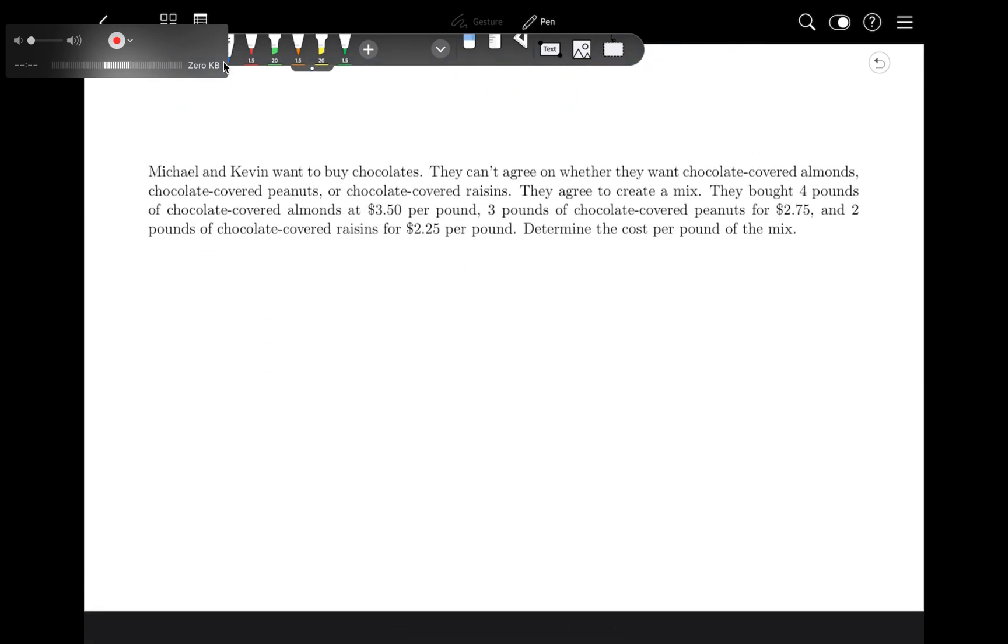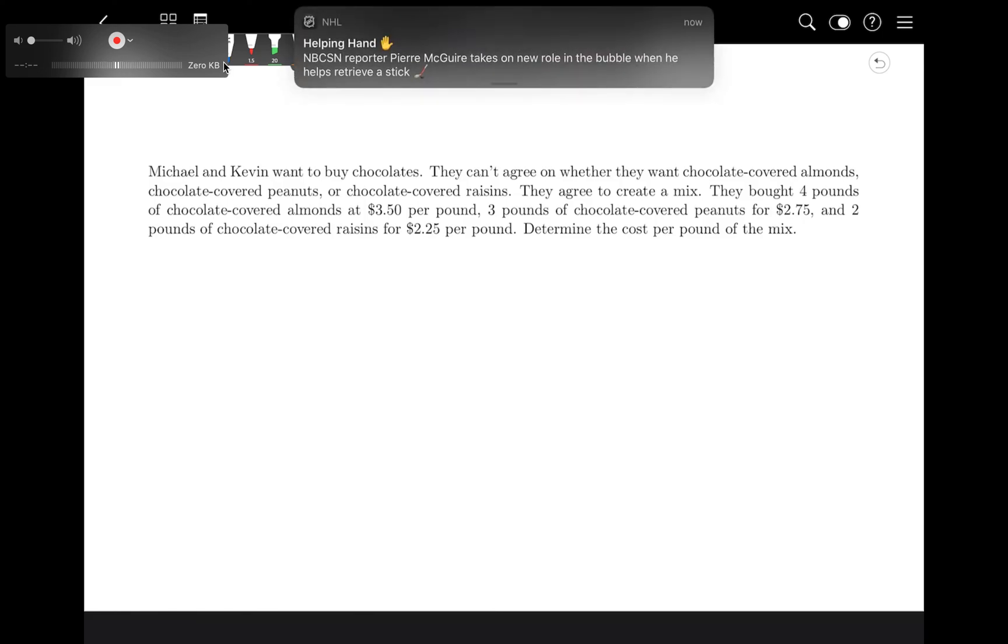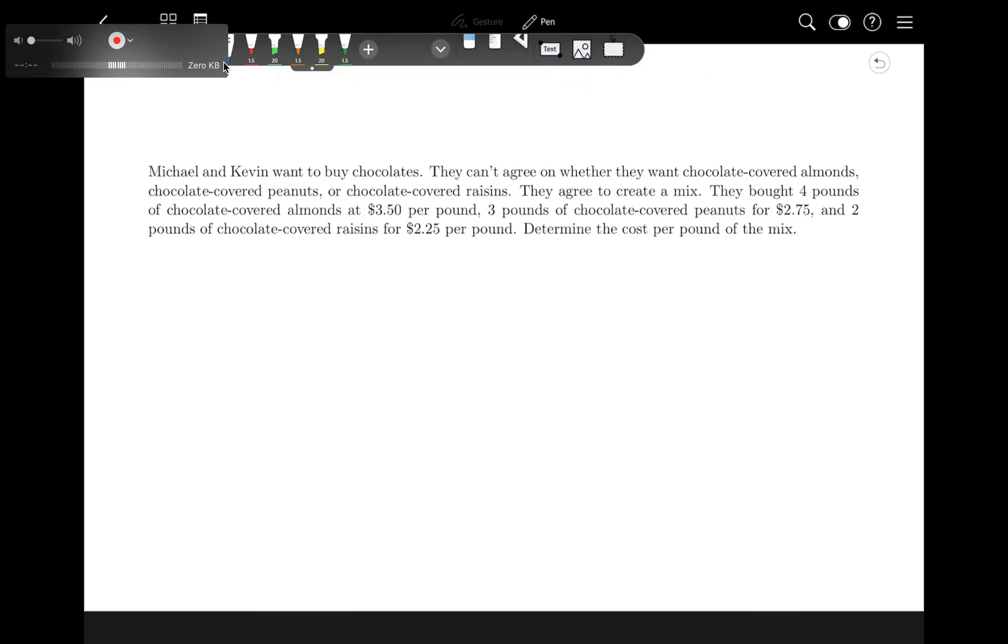Similarly, Michael and Kevin want to buy chocolates. They can't agree on whether they want chocolate covered almonds, chocolate covered peanuts, or chocolate covered raisins. They agree to create a mix. They bought four pounds of chocolate covered almonds at $3.50 per pound, three pounds of chocolate covered peanuts at $2.75 per pound, and two pounds of chocolate covered raisins at $2.25 per pound.